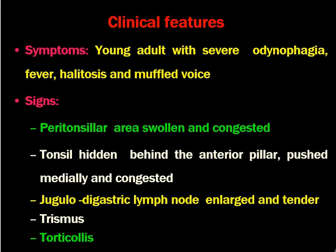There will be enlarged and tender jugulodigastric lymph nodes, usually on one side, and the patient might have torticollis due to decreased ability to move the neck towards that side. It must be stressed that peritonsillar abscess is usually a unilateral condition — it does not happen bilaterally most of the time.